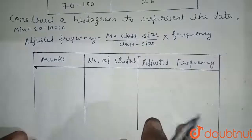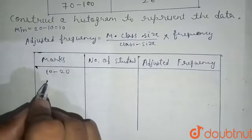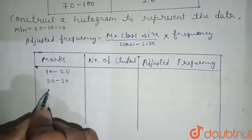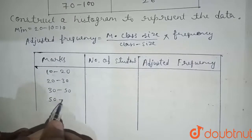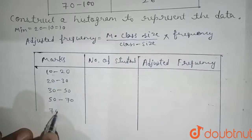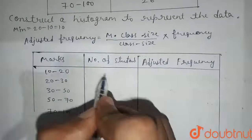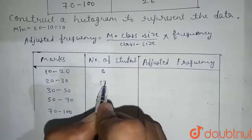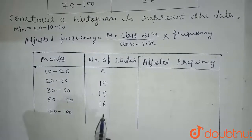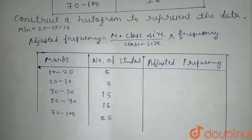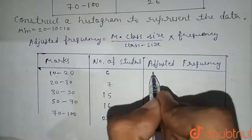Now writing the class intervals: 10–20, 20–30, 30–50, 50–70, 70–100. The corresponding number of students are: 6, 15, 15, 16, and 26.